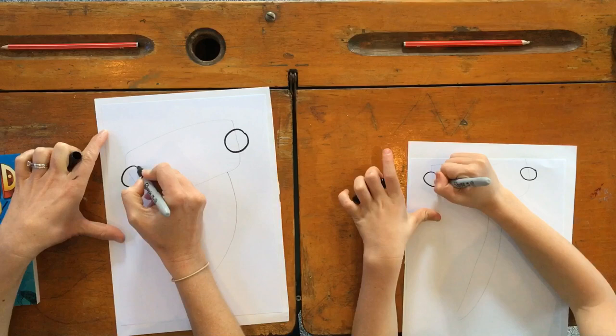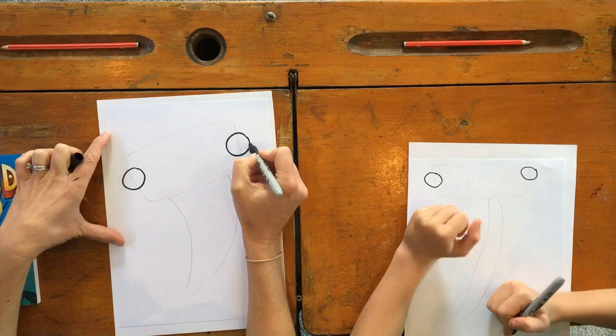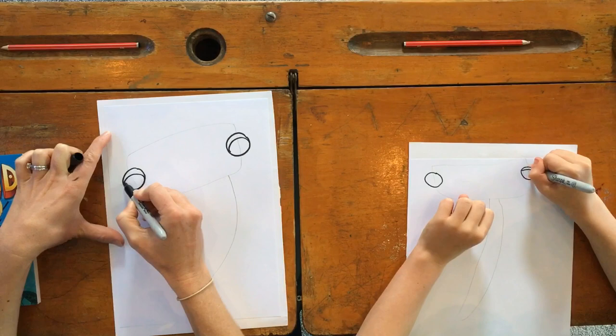And we're going to do another circle at the other end of our rectangle. Good job. Okay, we're going to put another circle inside that circle. So one circle here and another circle inside the other circle and we can colour those circles in. And that's going to be his eyes.